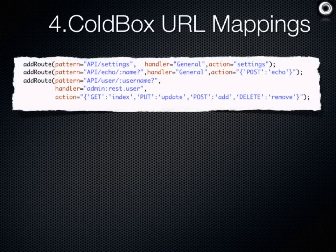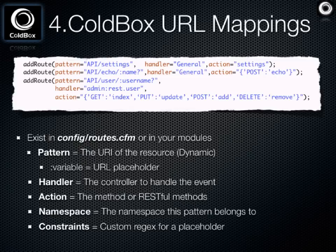For addressability, here's a snippet from the routing file in ColdBox. The most important method is addRoute — you give it a pattern (what comes through the URL) and map it to a specific event. So when a URL like slash api-settings comes in, it executes the general.settings event. You can also use colon notation for URL variables, with a question mark meaning the variable is optional. If it exists, it creates a variable in the request collection — like a 'name' variable — then routes to the appropriate handler.